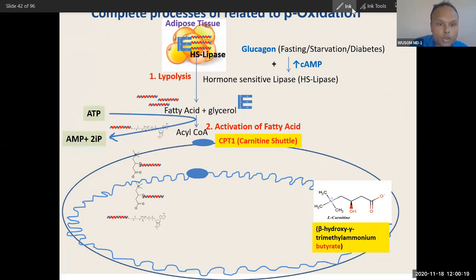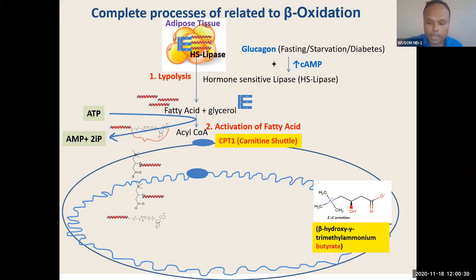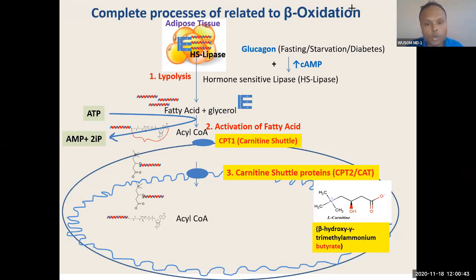After this step, you can see this is Coenzyme A — Coenzyme is a big molecule, basically a nucleotide — and the fatty acid is longer. So this is a bulkier molecule. Therefore, Coenzyme A cannot cross the inner mitochondrial membrane, but the fatty acid has to be inside the mitochondria.